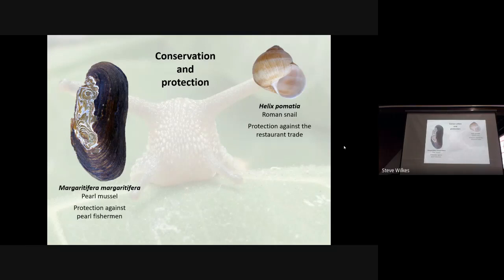One of the protected species is the Roman snail, Helix pomatia, and the reason it is protected is because the restaurant trade eats it. Where it is, it is very common — chalk grasslands in the Chilterns, for instance. Chedworth Villa got into difficulties when it wanted to expand a few years ago and had to get special permissions to move some of these Roman snails. I've looked on site in the South Downs where there are thousands of them. So locally it's common, but the number of sites is fairly small.